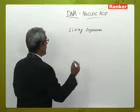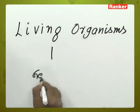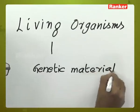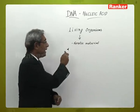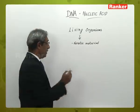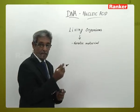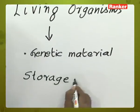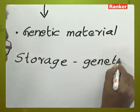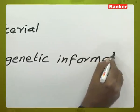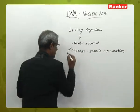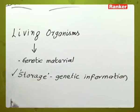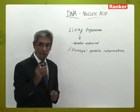All living organisms are characterized by the presence of genetic material — this is a unique character of all living organisms. In living organisms, nucleic acids help in the storage of genetic information; they are the repositories of genetic information from times immemorial. Storage of the genetic material is the most important function of nucleic acids.